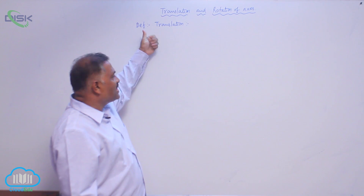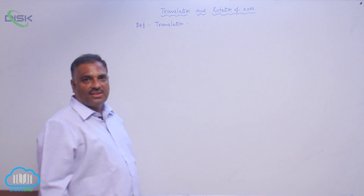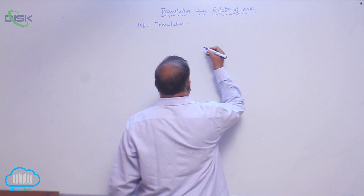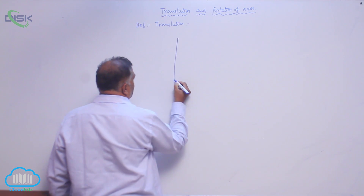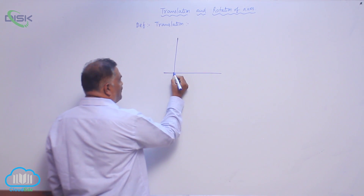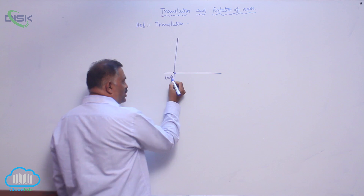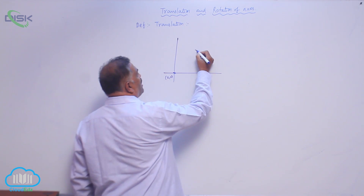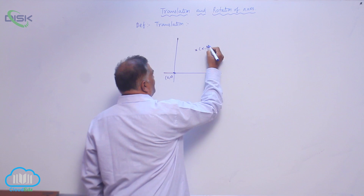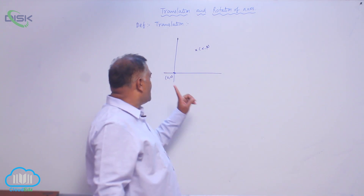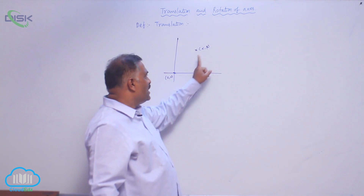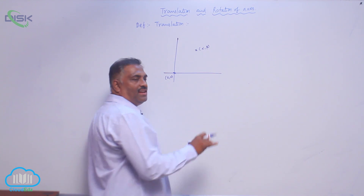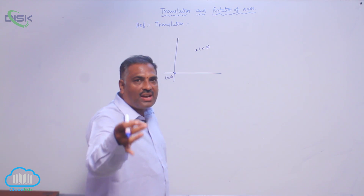What is the definition of translation? Translation is shifting. If you take the coordinate axis, shifting of the origin (0,0) to a desired point (α, β) without changing the direction of the coordinate axis.